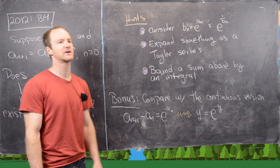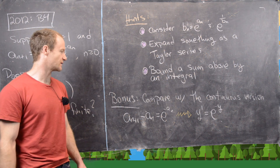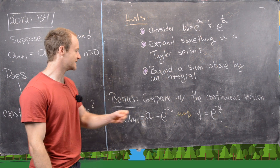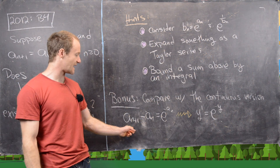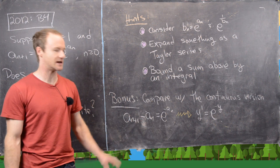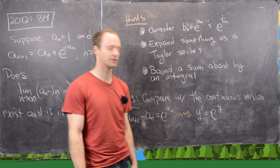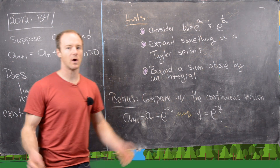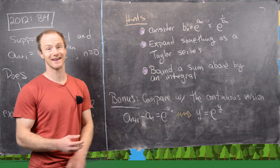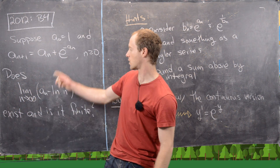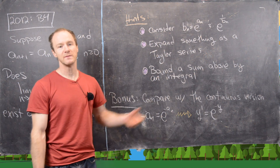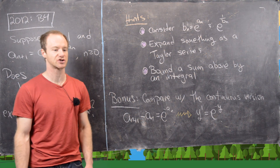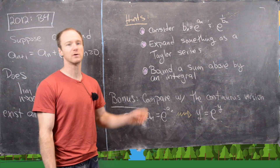As a bonus, notice that the world of continuous functions is simpler than the world of sequences. If we rearrange the recursion, a_{n+1} − a_n = e^{−a_n}, its continuous analog is the differential equation y' = e^{−y}. That's a day-one differential equation solvable by separation of variables, giving a nice closed form from which you can compute the corresponding limit easily. Try the problem with these hints, or the easier continuous version, before watching the full solution.